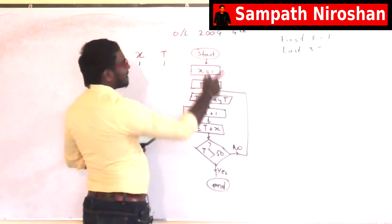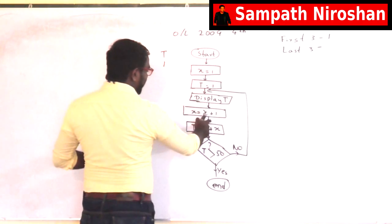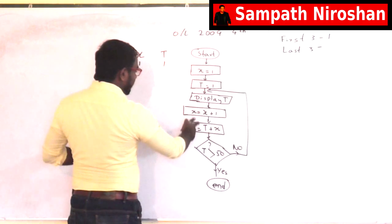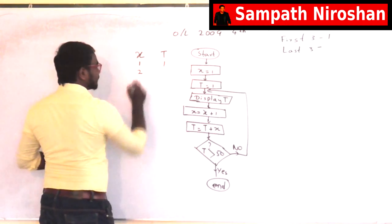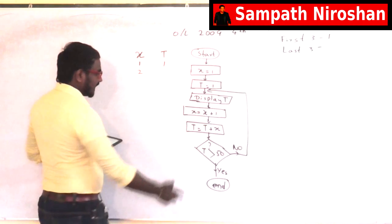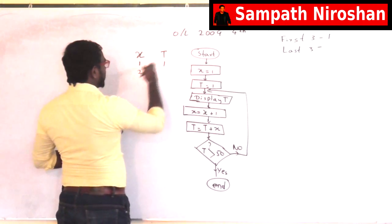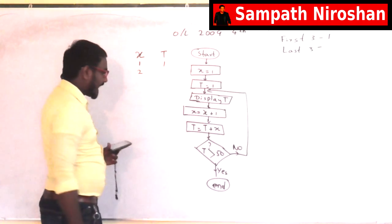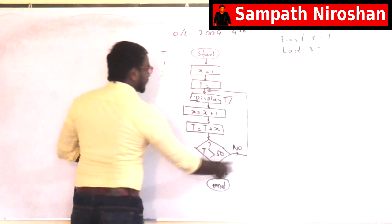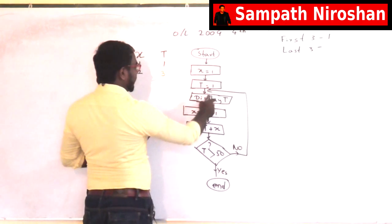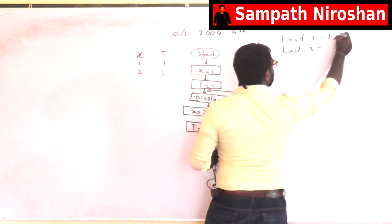So next thing. I got the first value. That's 1 from here. So during the second cycle what is happening? Before the second cycle, x is becoming x plus 1, which means 1 plus 1. X becomes 2. And next thing is, t is assigned with t plus x. So t is 1, 1 plus 2, t becomes 3. And it is checking, is t greater than 50? Not yet. So it is going again. So in the going it is displaying t. So the second value there I get as 3.